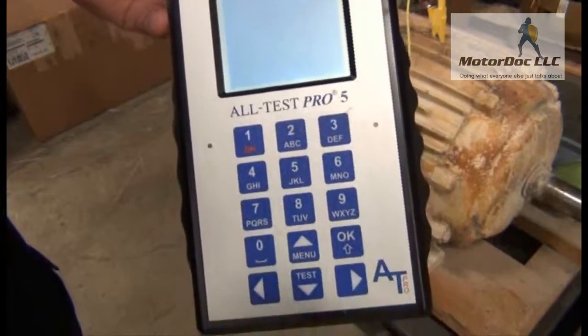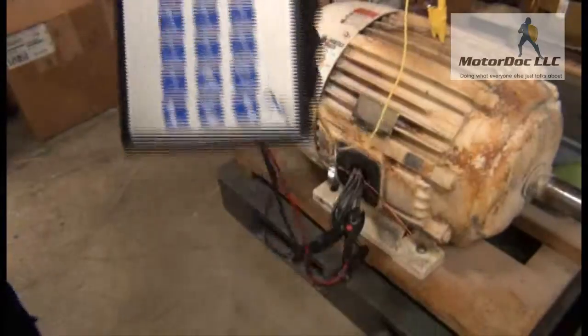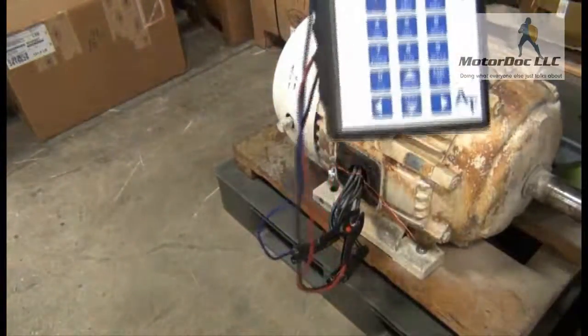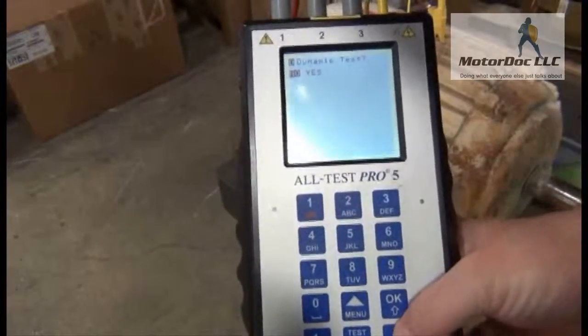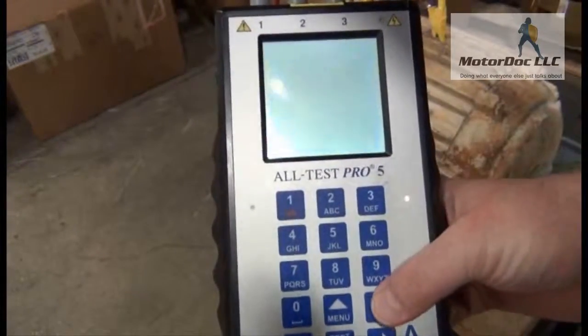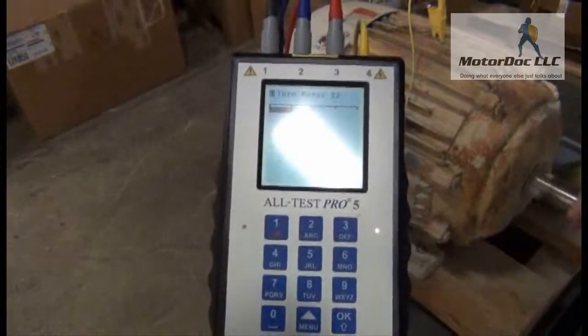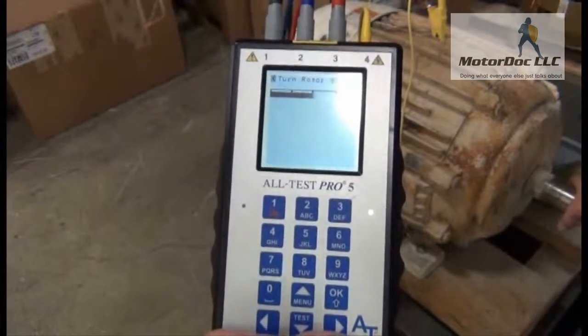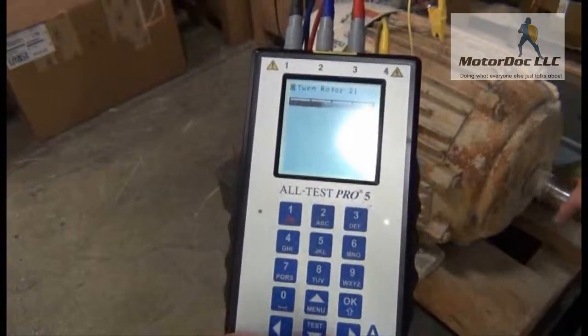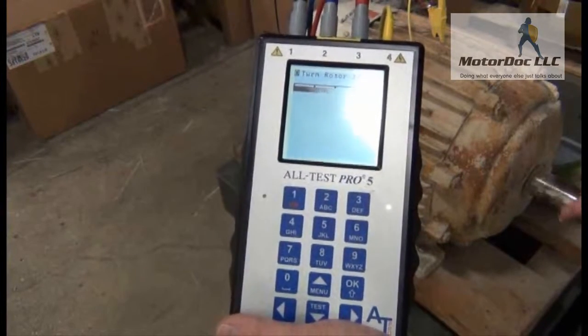As you can see, it does not take too long. The next one is a dynamic test. It's going to ask me if I want to do that. That particular test involves turning the shaft. So I'm going to select yes and select OK. Now I'm going to turn the rotor, and I need to turn it at a relatively constant pace. I don't want to start, I don't want to stop. And as you can see, it's going to flip through each one until it is done.